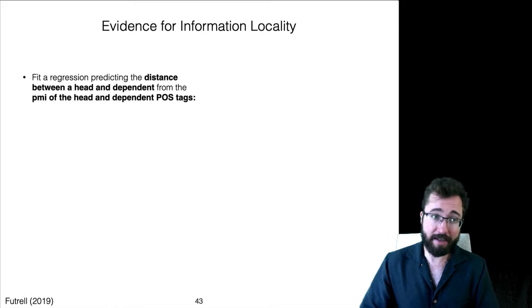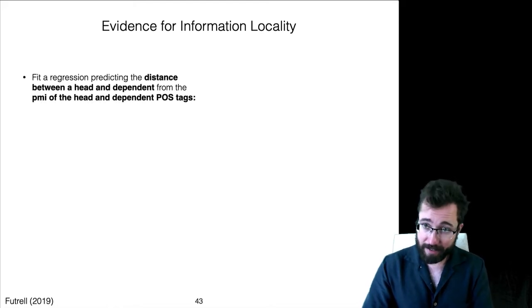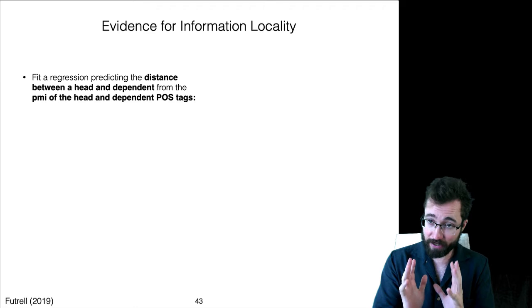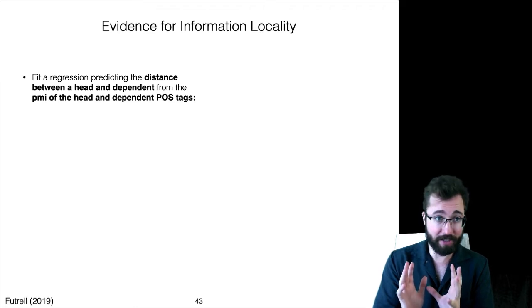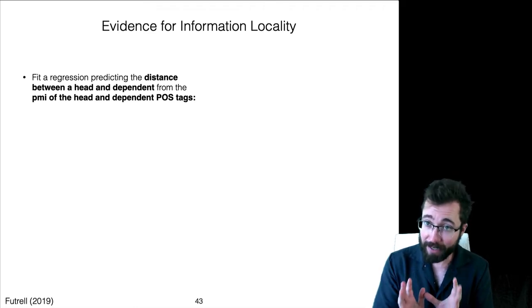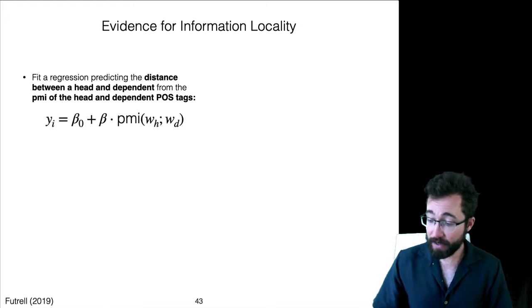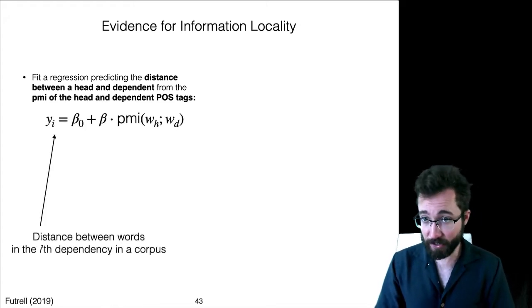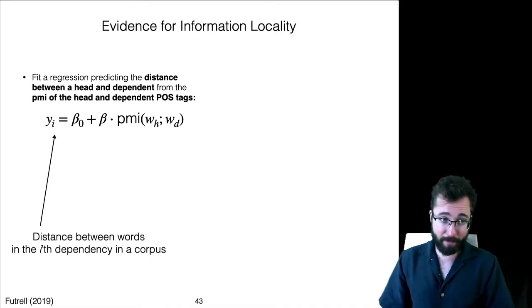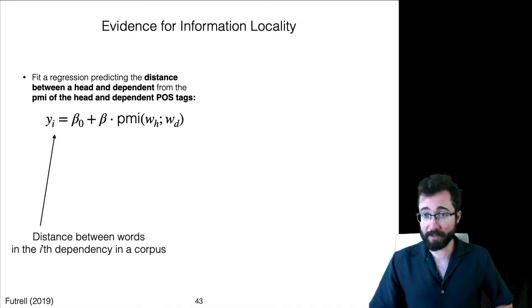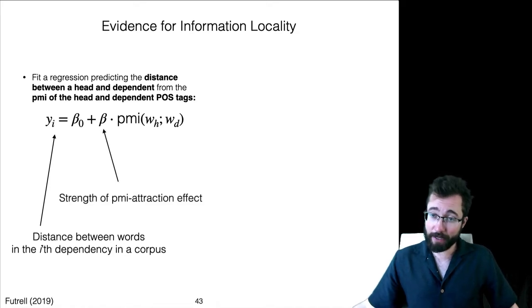We can make this a bit more precise. So, I fit a regression predicting the distance between two words in a dependency relationship as a function of the PMI of the part of speech tags of those two words. The regression looks like this. You're trying to model the distance between two words in a dependency. And you're trying to model it using a function that looks like this. It's beta zero, a scalar, plus beta times the PMI of the words.